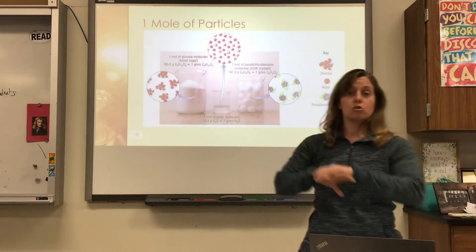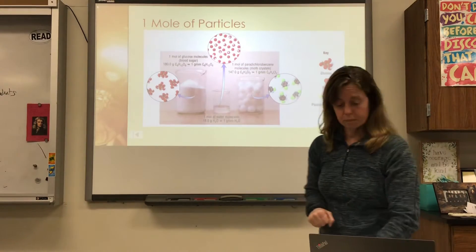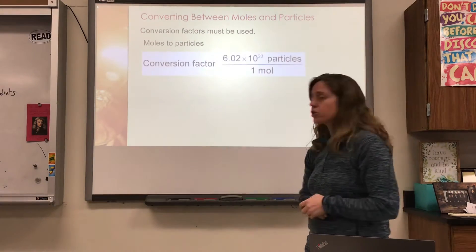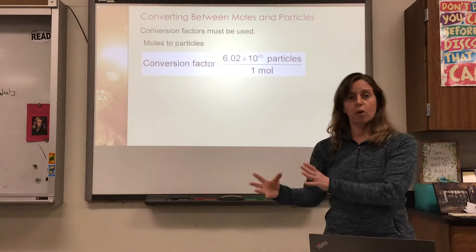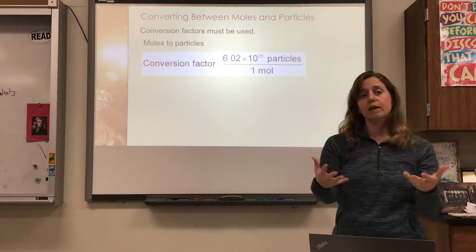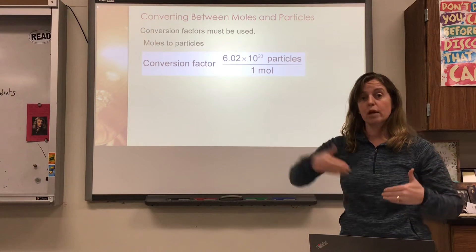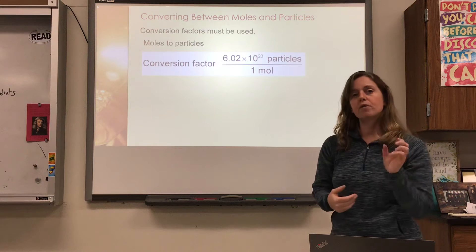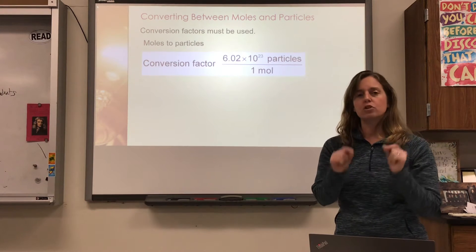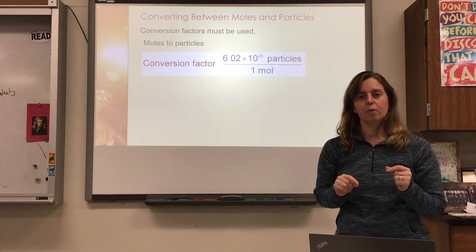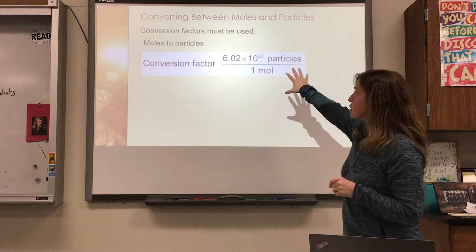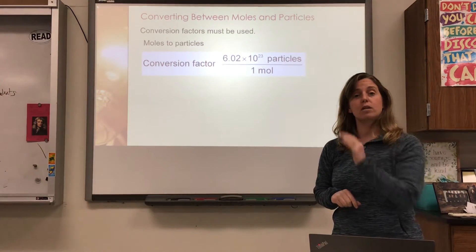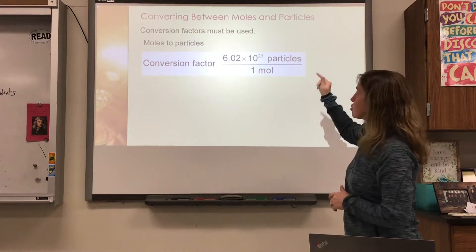That's the general term they use to describe all types of particles. Now, how do you understand the conversion between moles and particles? If you're given so many moles of something and you're trying to convert into particles, take whatever they give you in the problem — we always start with what they give you — and then use the conversion factor: 6.02 times 10 to the 23rd particles over one mole.